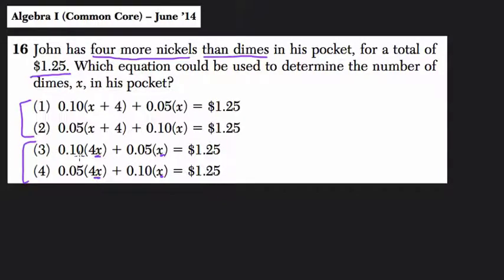What's different about them is the location of 0.10, the value of a dime, and 0.05, the value of a nickel. So before we get into whether or not every equation is correct, I would look at the way they use the variables here. Because that gives a way that both 3 and 4 cannot be correct.